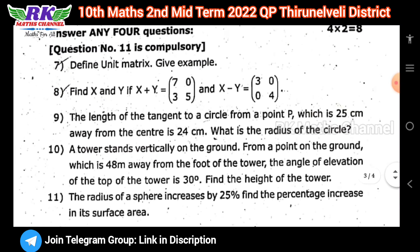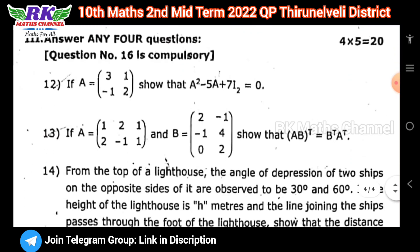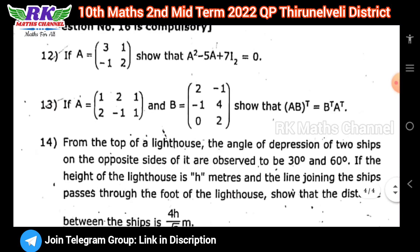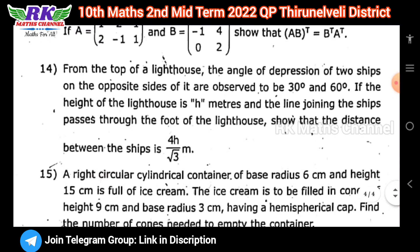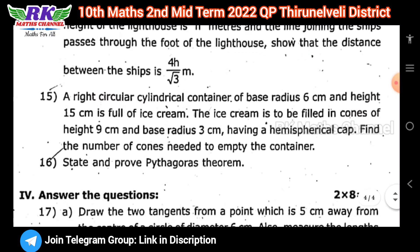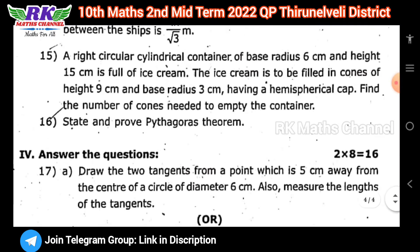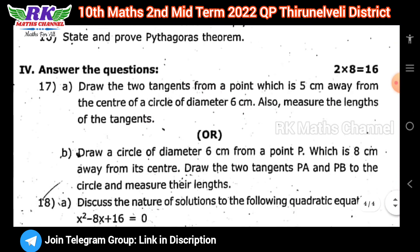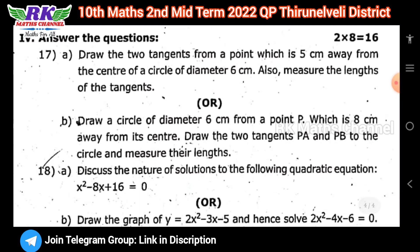These are composite-level questions. Next, from five more questions, you choose five — answer four questions for 20 marks. First topic: matrices. Next question pattern: trigonometry — angle of elevation and angle of depression. Question number 15 is on mensuration.